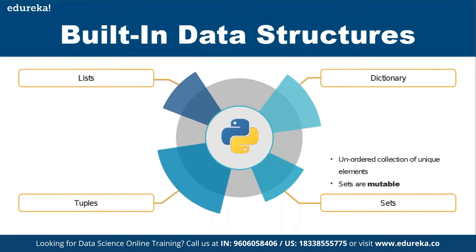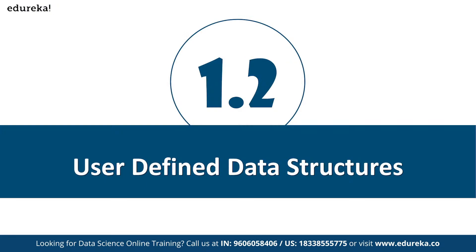Sets are a completely unordered collection of unique elements, whereas lists and tuples are ordered collections. When I say unordered, there is no order preserved and elements can come in any order when you access them. Sets are mutable — once you add elements, you can add or delete more elements.